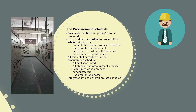In the previous section we identified all the packages that we were going to procure from the market when developing the work breakdown structure. In this section we're now going to work out when we will need to procure all these packages. When we procure a package, we'll be driven by two key things: the earliest we could start procurement — meaning when all the predecessor activities required to conduct procurement for a given package are complete — and also the latest date the goods and services being procured will be required on site. All this information is captured in the procurement schedule.